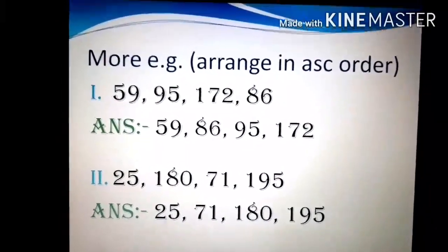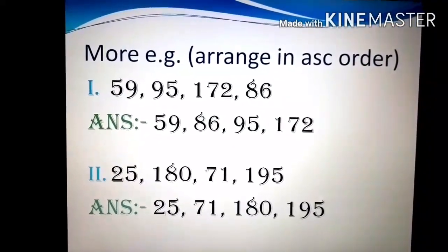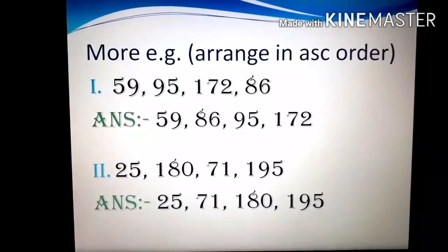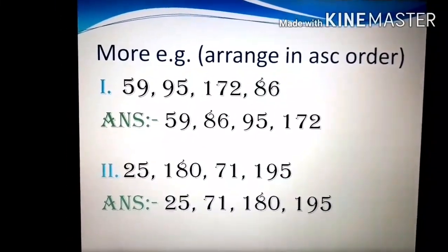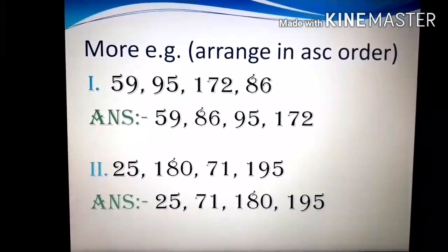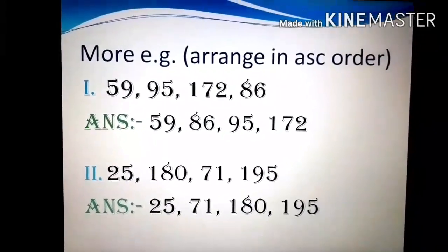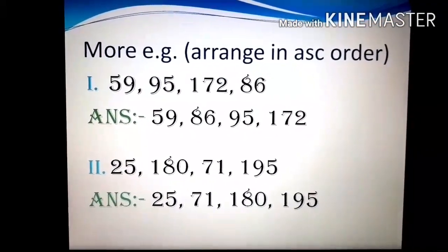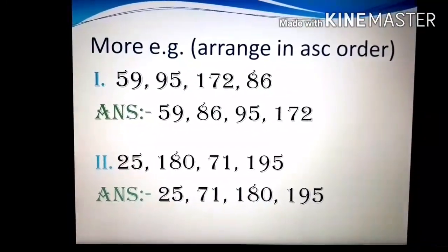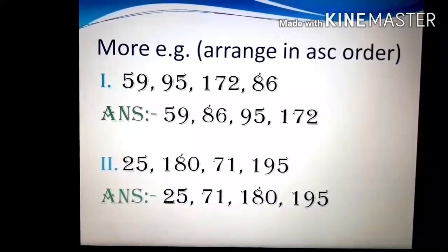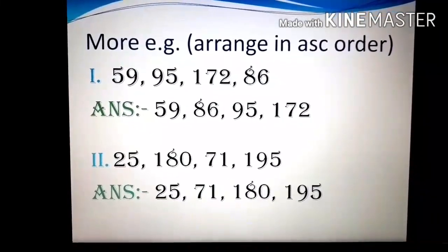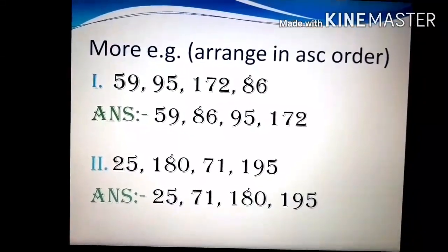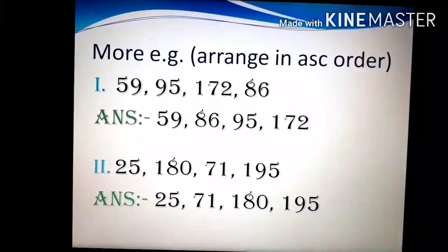Another example also we will see. How to arrange the numbers in ascending order. Number 1: 59, 95, 172 and 86 are there. We have to arrange these numbers in ascending order. First of all, we will see which is the smallest number. Here the answer is 59, then 86, then 95 and then 172. Same as in number 2, the numbers are 25, 180, 71 and 195. Here also the answer is 25, then 71, 180 and 195.